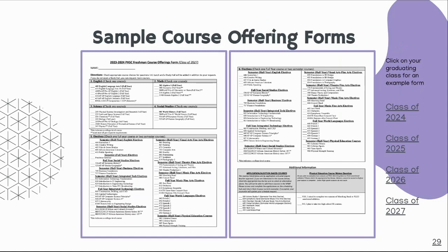These are the sample course offering forms — this is an example of the rising freshman one. You'll see on the right-hand side of this presentation there are links for all the other rising classes. Please download these and print these off. It's a great tool to have when you're requesting your classes so you know exactly what it is that you want to take. You can find these on the Scheduling Hub, which is available today.